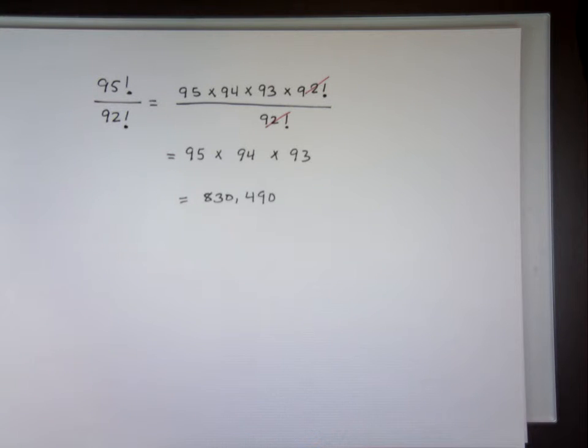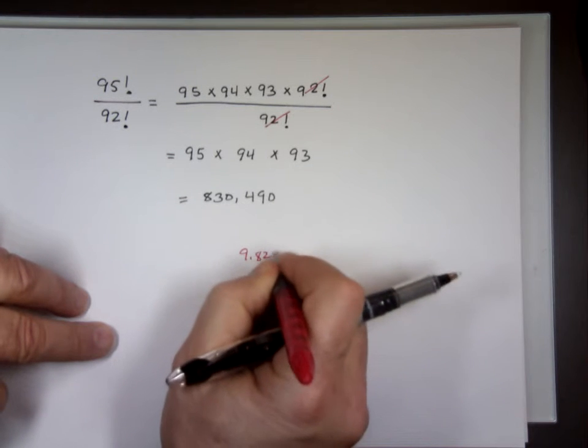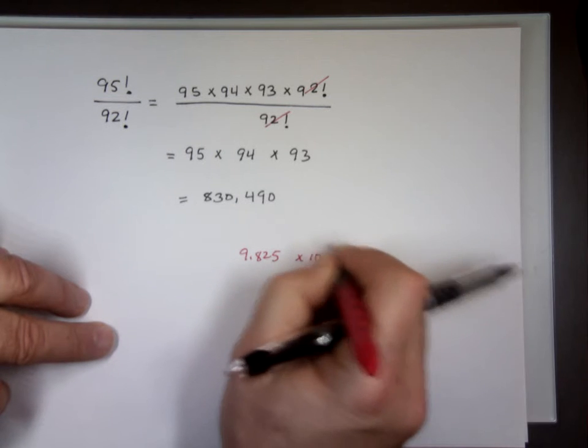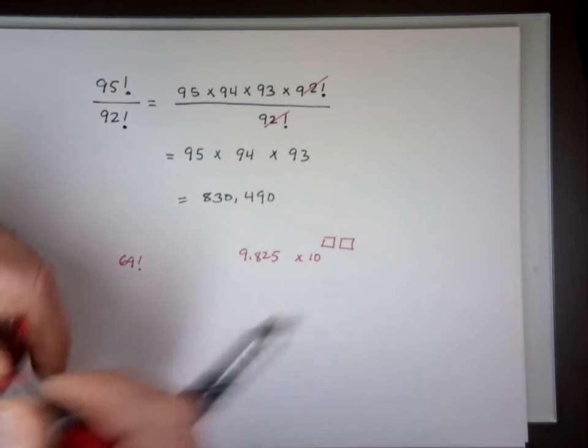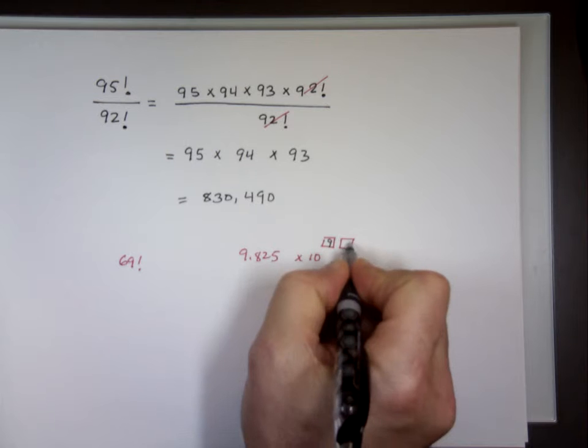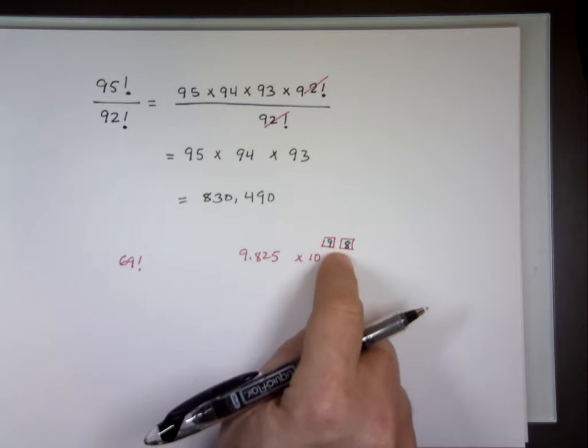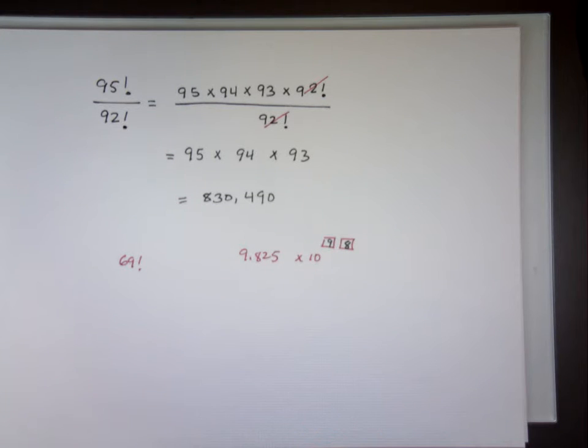The reason most calculators will not do anything above 69 factorial is because that number becomes so big it goes into scientific notation. So when they write the number, they go 9.825, something like this, times 10 to the power, and they give you two spots for that power. When you put 69 factorial, that's the biggest number. That power now is 98. When you go to 70, that power now becomes more than 100, and they can't write three digits in two spots, and that's why you have the overflow. So most calculators will give you only up to 69 factorial.